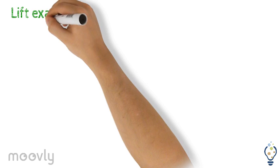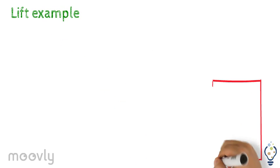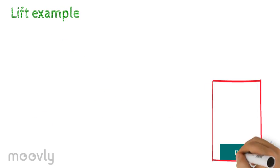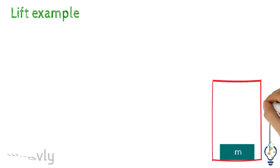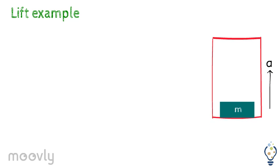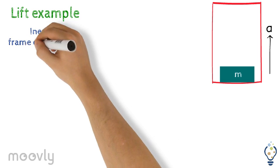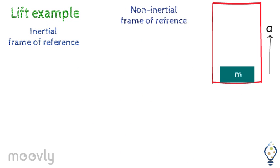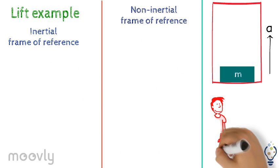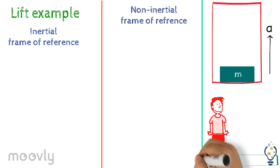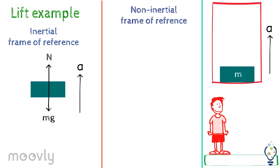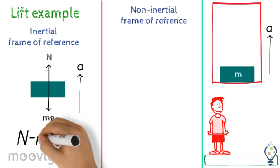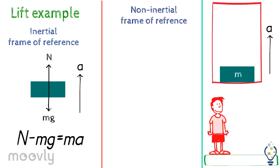Now we can understand pseudoforce better with an example of a lift having a block of mass m, moving upwards with an acceleration a, with respect to both inertial and non-inertial frames of reference. In an inertial frame of reference, the observer is at the ground. You can see the FBD imagined by the observer in an inertial frame of reference. We can also write Newton's equation of motion.